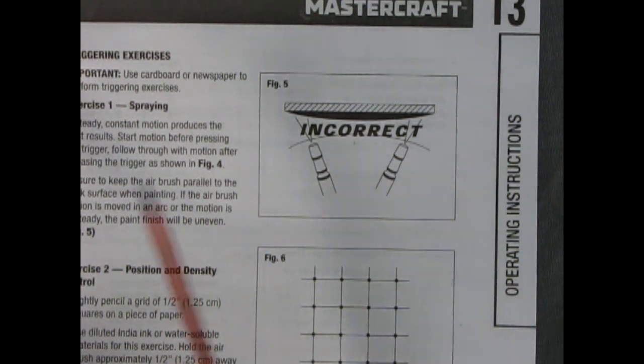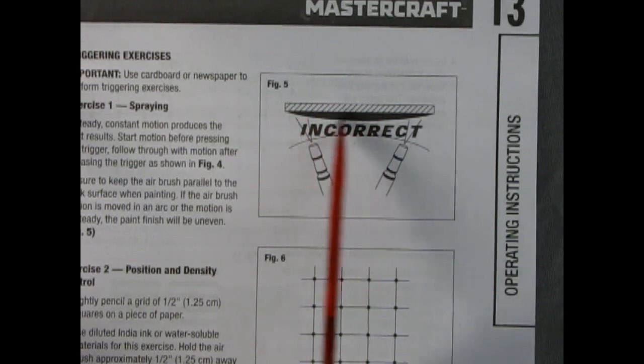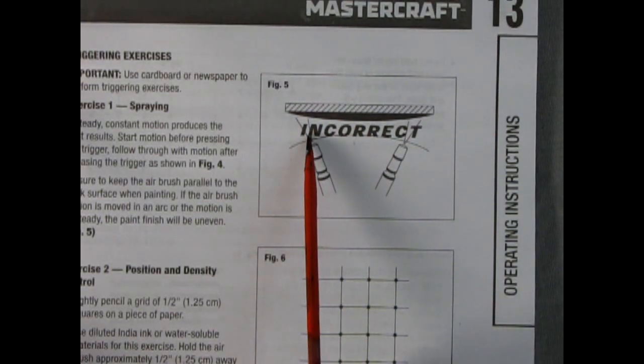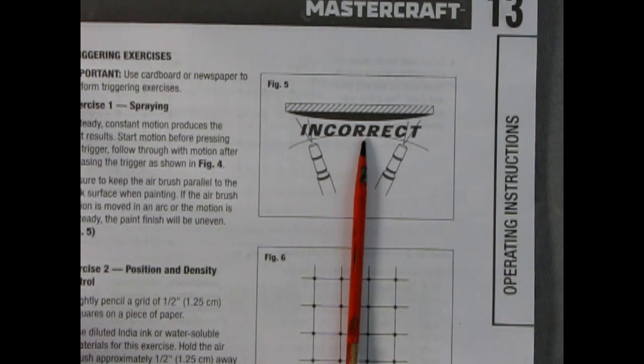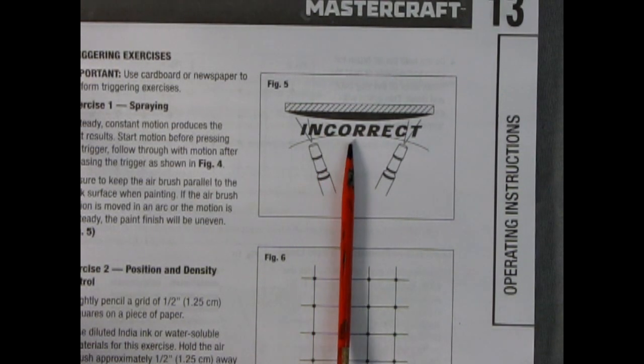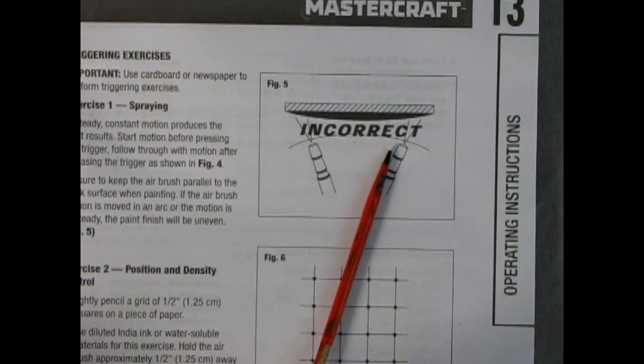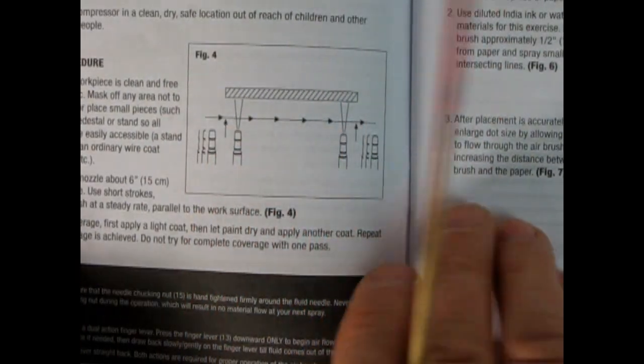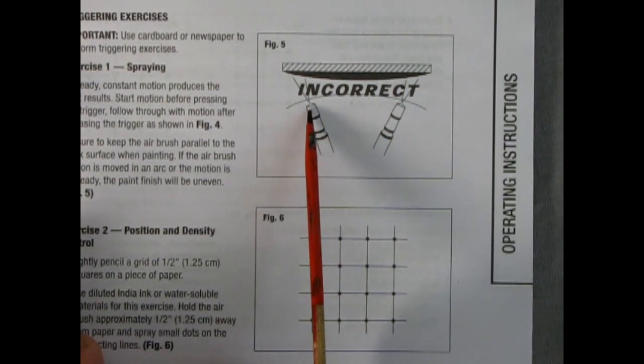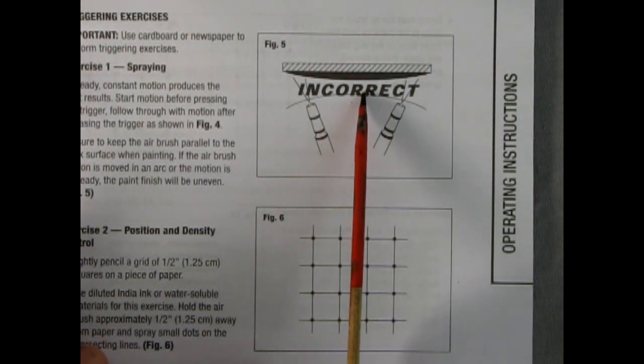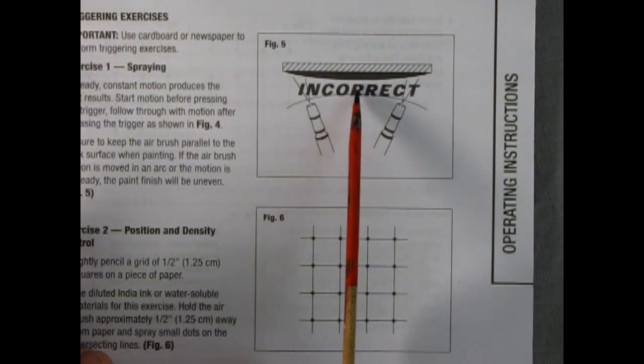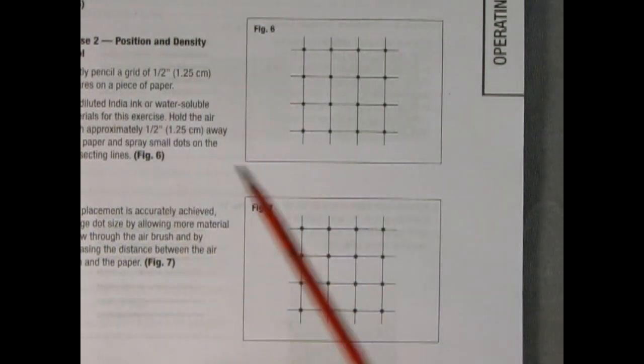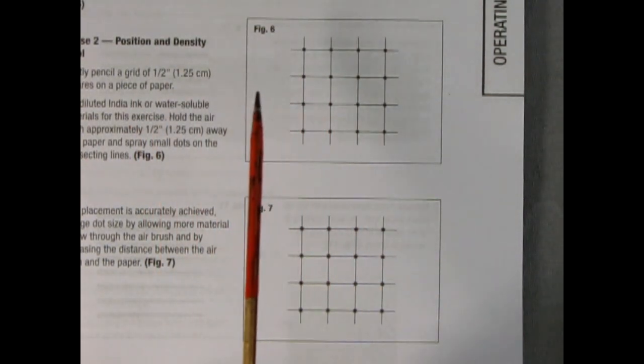If you swing your arm like this across, what happens is right here on your product it's very thin. Then as you come in here, you get extremely thick right in the center because that is the closest the gun is to the item. Then as you come out here again it swings away. So you're not getting nice perfect even coverage all the way across. You're getting thin on the edges and thick in the middle. The more paint you put in one spot, the more it's going to run.